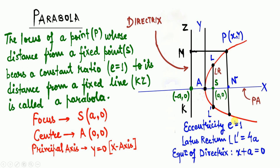Eccentricity is a ratio. Consider a point P: drop a perpendicular from P onto line KZ — that distance is PM. The distance from P to the focal point S is PS. The ratio PM to PS is called eccentricity, and this ratio remains constant.